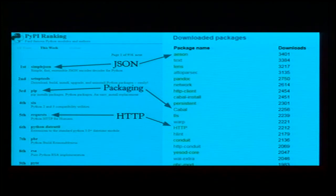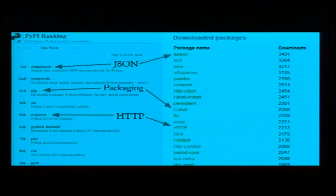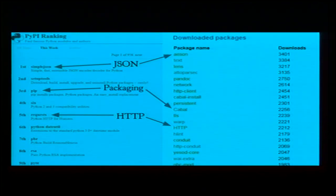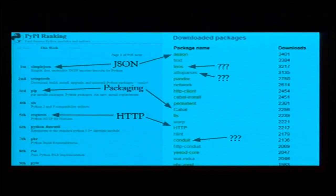We're now going to look at a few Haskell libraries to see parts of the design space we don't usually see in Python. On the left are the top downloaded libraries in the Python Package Index, and on the right are the top downloaded libraries in the Haskell package index. When I said Haskell and Python are similar I wasn't lying — the same packages appear in both. But on the Haskell side you'll find a few libraries without a Python equivalent: Lens, attoparsec, and conduit.